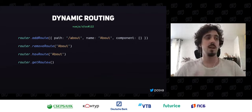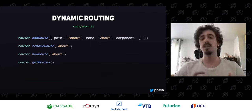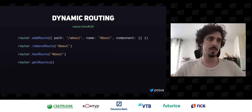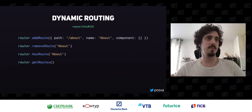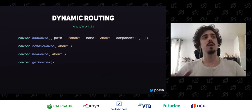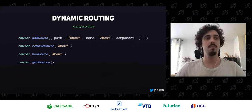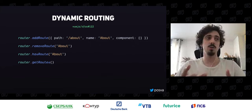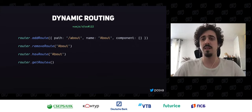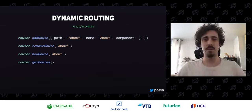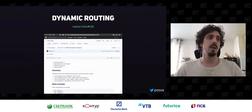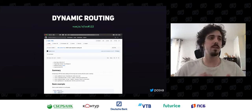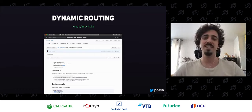The API coming for Vue Router 4 has four very simple functions: add route, remove route, has route, and get routes. You can remove a route using its name, or you can use a symbol so you don't have to provide a name. Also, when you add a route it returns a function that you can call to remove it, allowing flexibility when you have no name or symbol. The whole idea is in an RFC that has been merged.